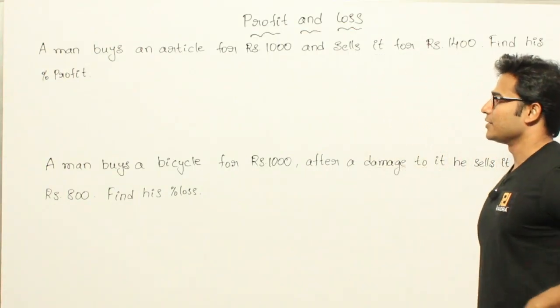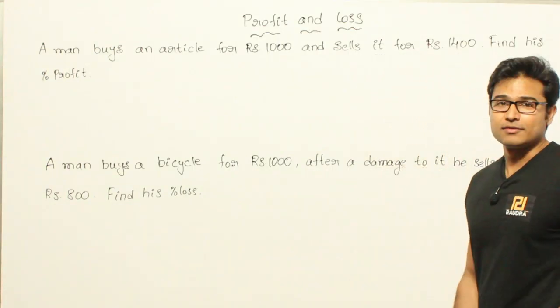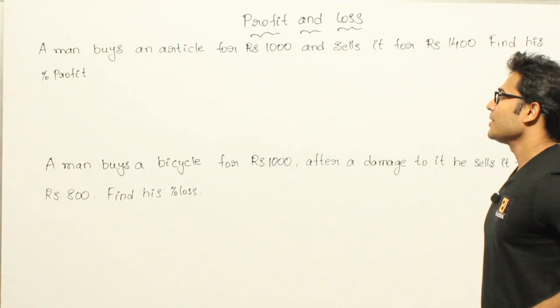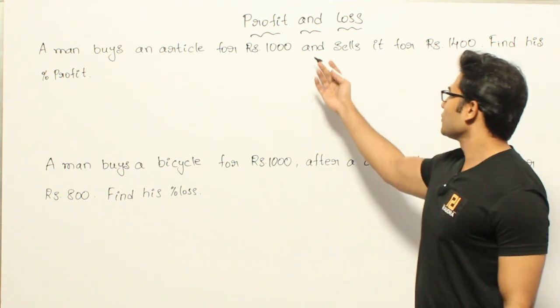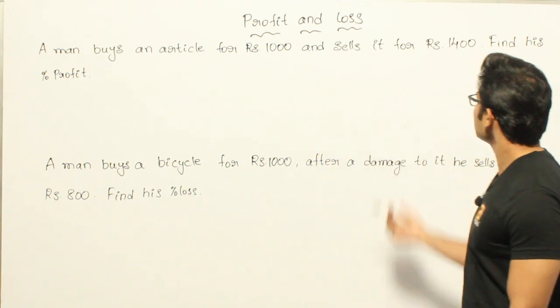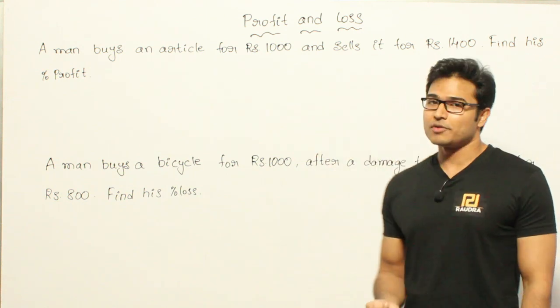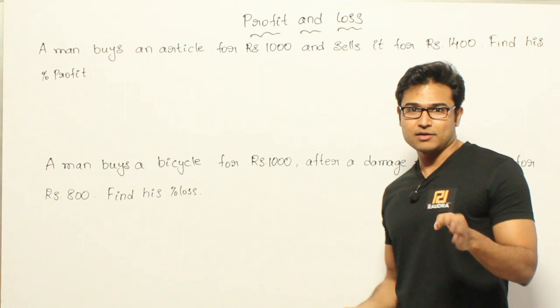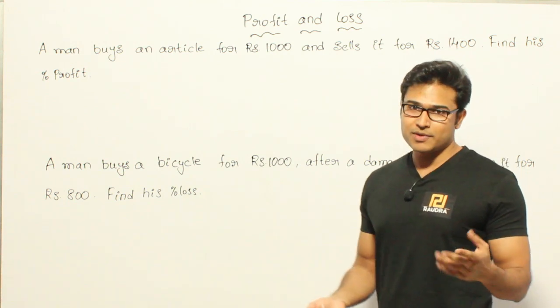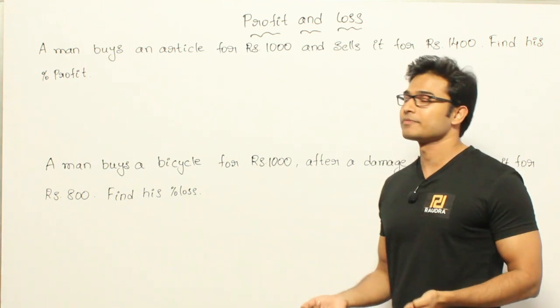Two examples on the topics we have seen. A man buys an article for 1000 rupees and sells it for 1400 rupees. Find the profit percent. This is a direct application of the formula that we have seen earlier.